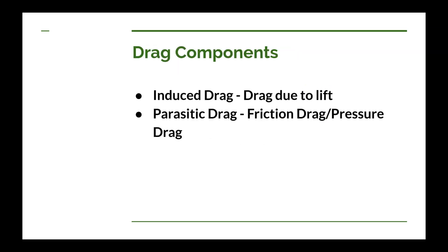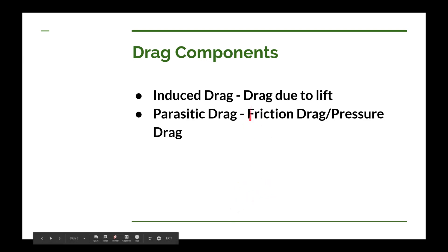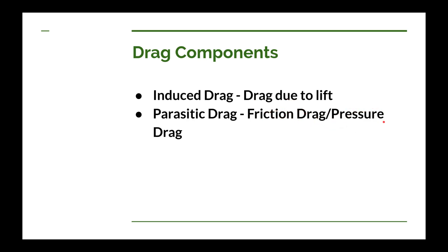There are two significant contributors to drag. One is called induced drag, which is drag due to lift generated by the wings. Then there's parasitic drag, which is friction drag plus pressure drag — two different kinds of parasitic drag. Friction drag is due to the viscosity of the air moving over the surface. Pressure drag includes things like interference drag and vortex drag behind a rounded trailing edge. You can calculate friction drag reasonably accurately; it's a little more difficult to calculate pressure drag; and induced drag is fairly easy to calculate.